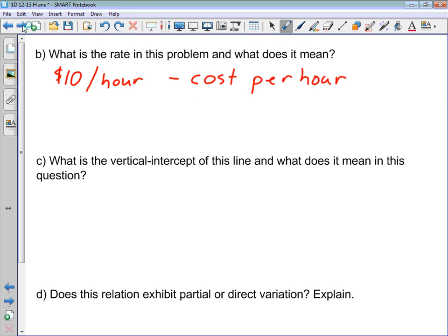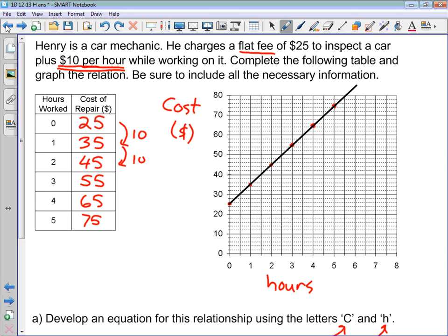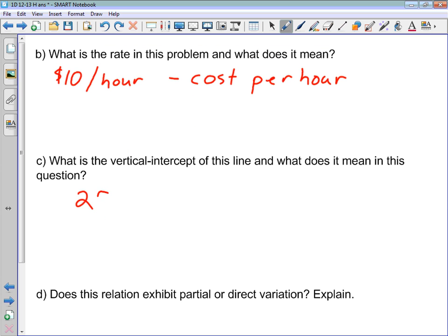What is the vertical intercept of this line, and what does it mean in this question? Our vertical intercept, where our line crosses this axis, is 25. So 25. Our y-axis is in dollars, so $25. What does this represent? This represents our flat fee, or our fixed cost, or whatever you want to call it.